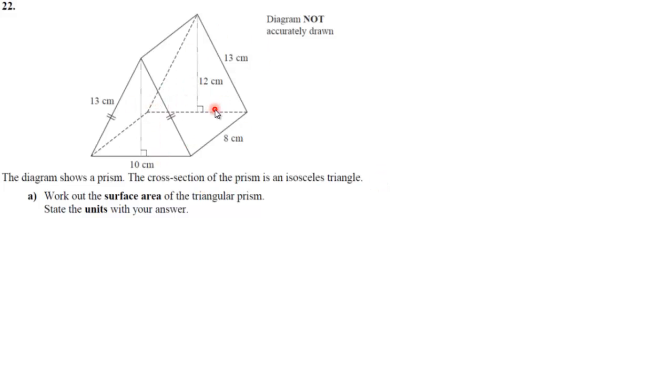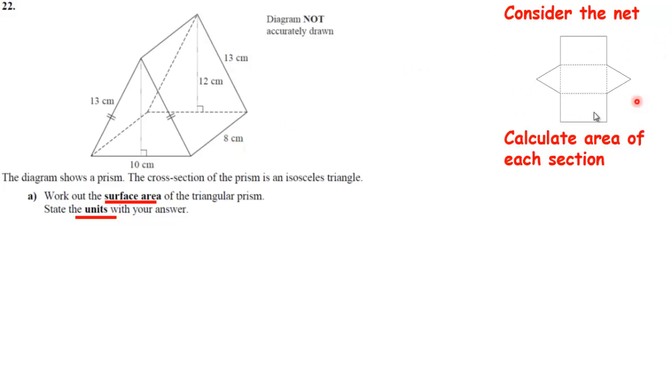If this was a cardboard box, what would it look like if I broke it all apart? The net is going to look something like this. You have the triangle at the front, the triangle at the back, and then all the way around. On the sides, you have two rectangles and you have a base as a rectangle.